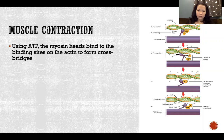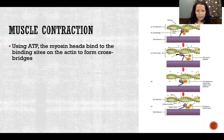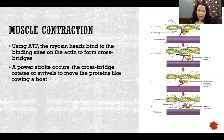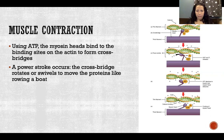This process requires ATP. Using ATP — adenosine triphosphate — the myosin heads bind to the binding sites on the actin to form cross bridges, and then there's a power stroke. They grab on and pull, which is the power stroke. The cross bridge rotates or swivels to move the proteins, like rowing.